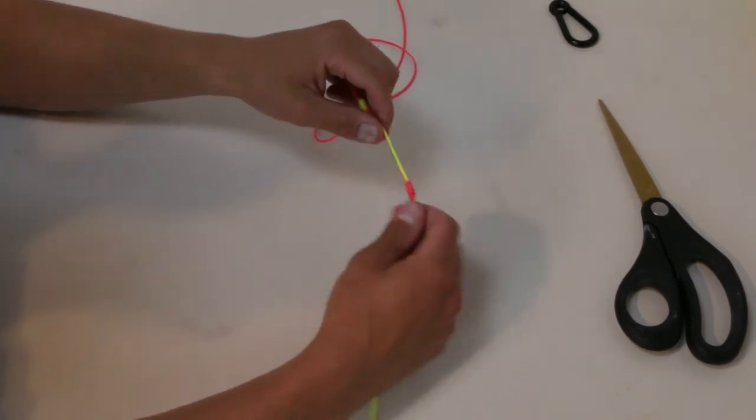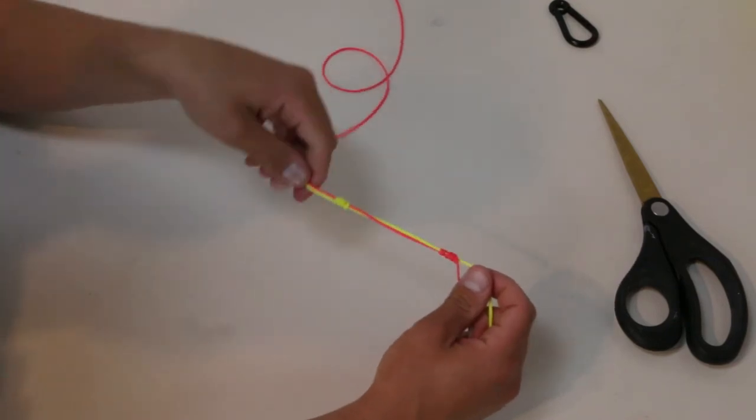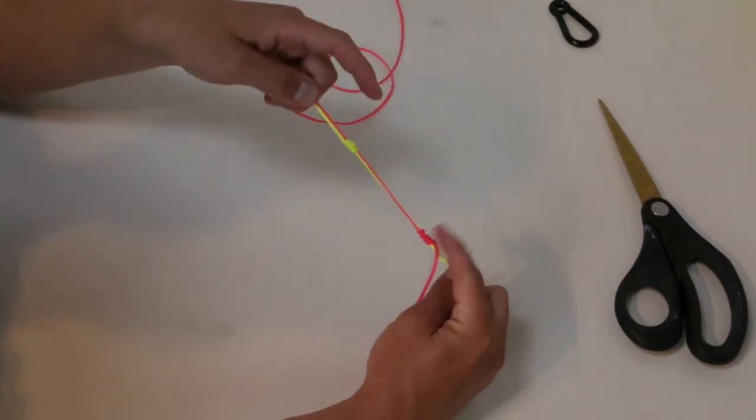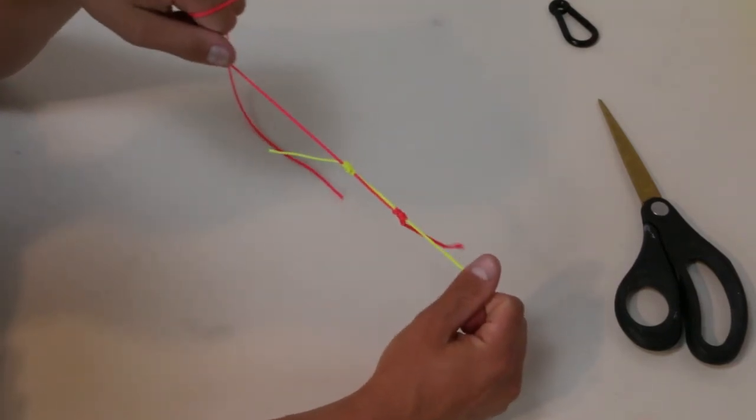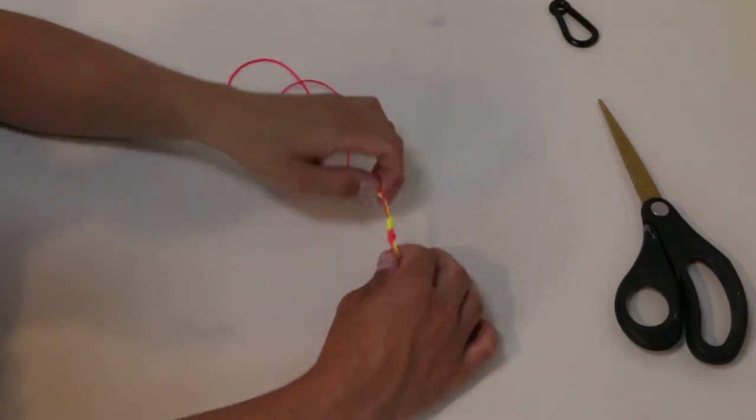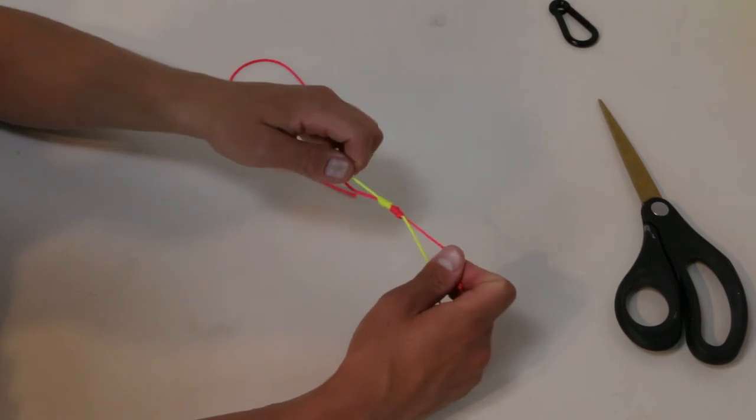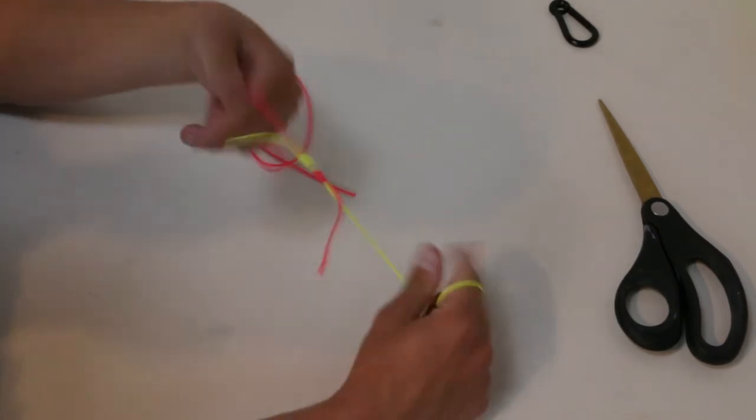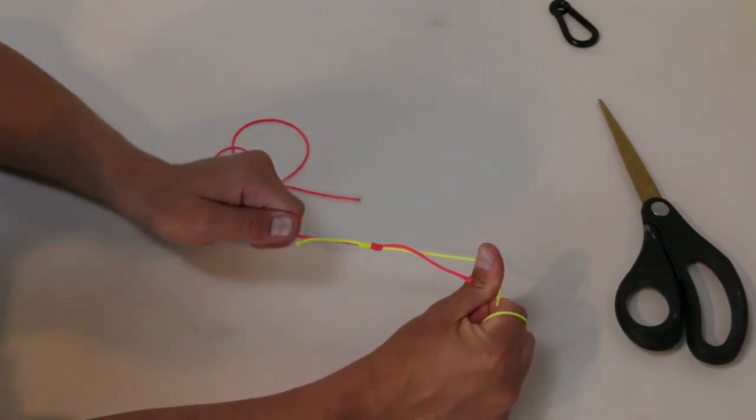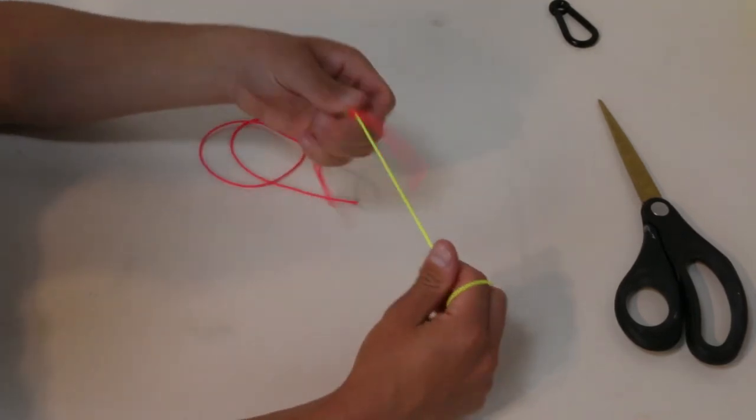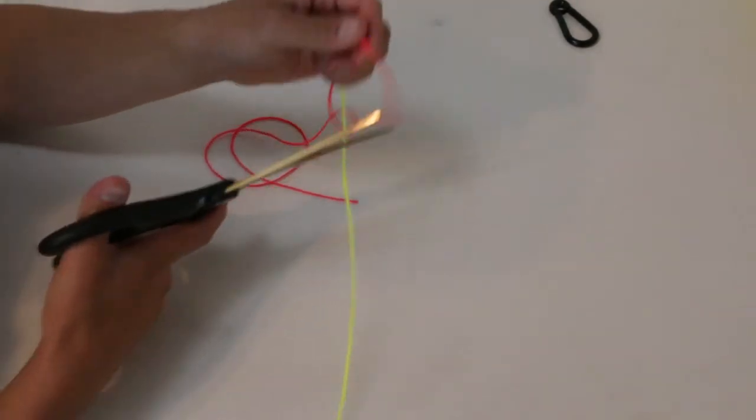Snug that down fairly tight. At this point, you're going to want to wet your knots. Wet this knot and wet this knot real well. Tighten them down. And before you snug it all the way down, I'm going to tighten my tag ends first. And then these knots should tighten down on each other really well. Then we're going to go ahead and we can trim our tag ends here.